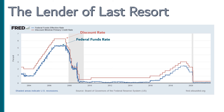However, if a bank is unable to secure a loan from another bank, they can turn to the Federal Reserve's discount window and borrow directly from the Fed.